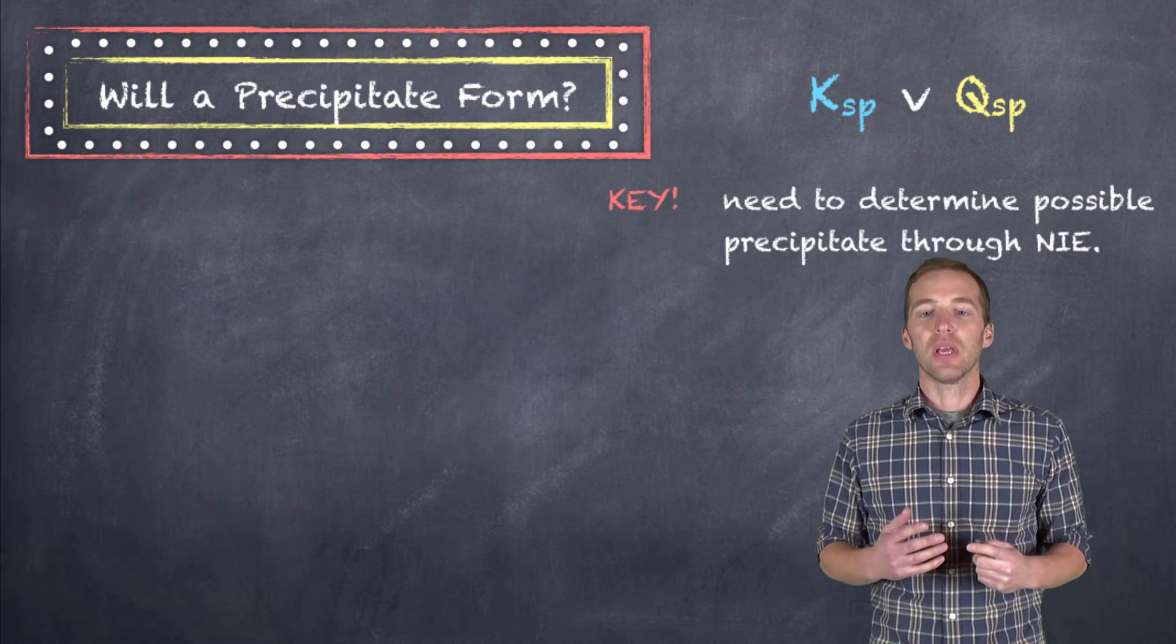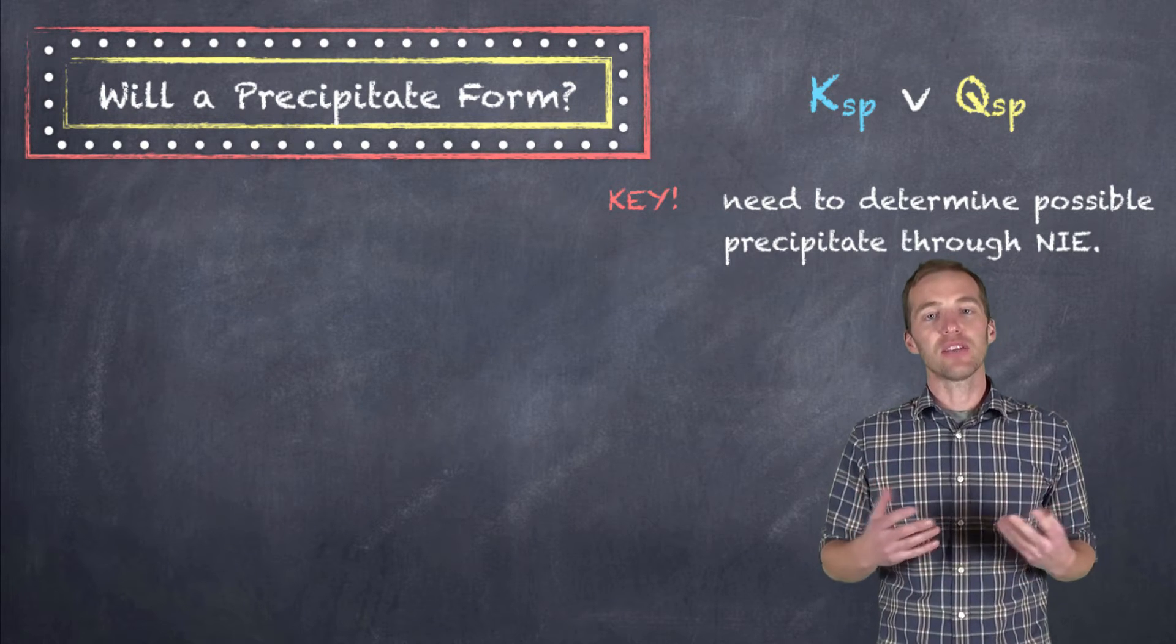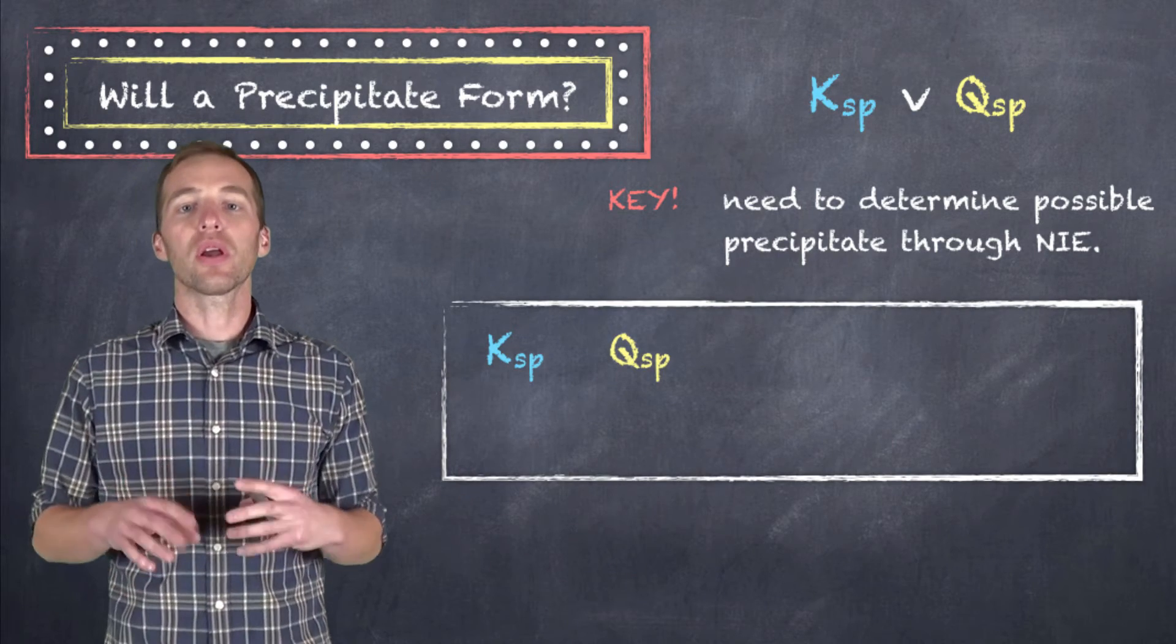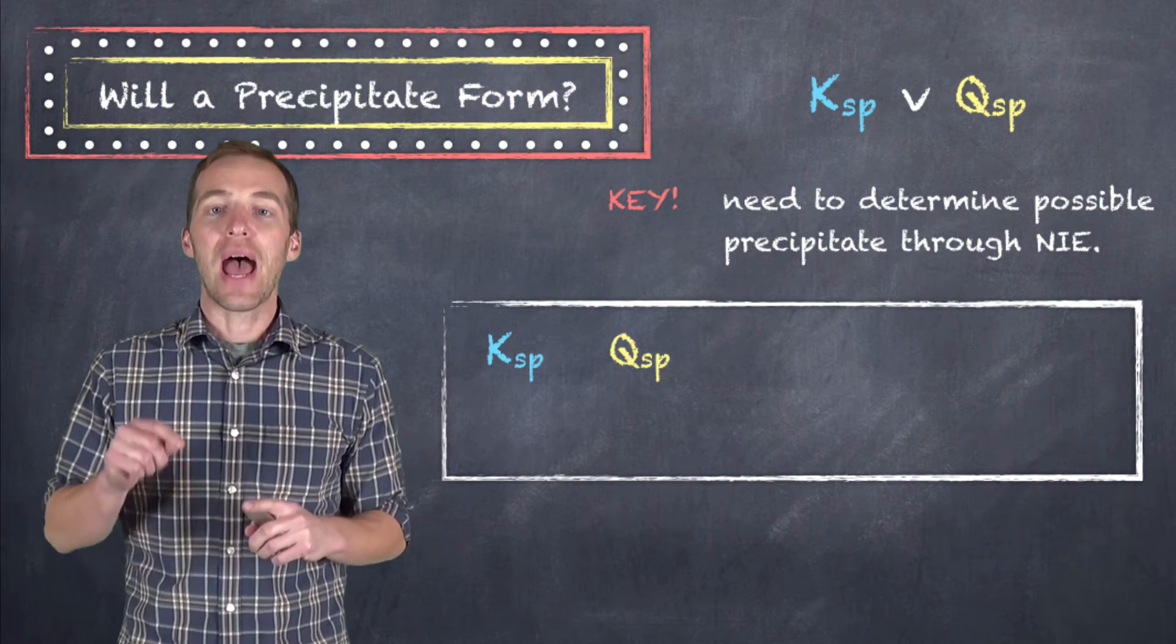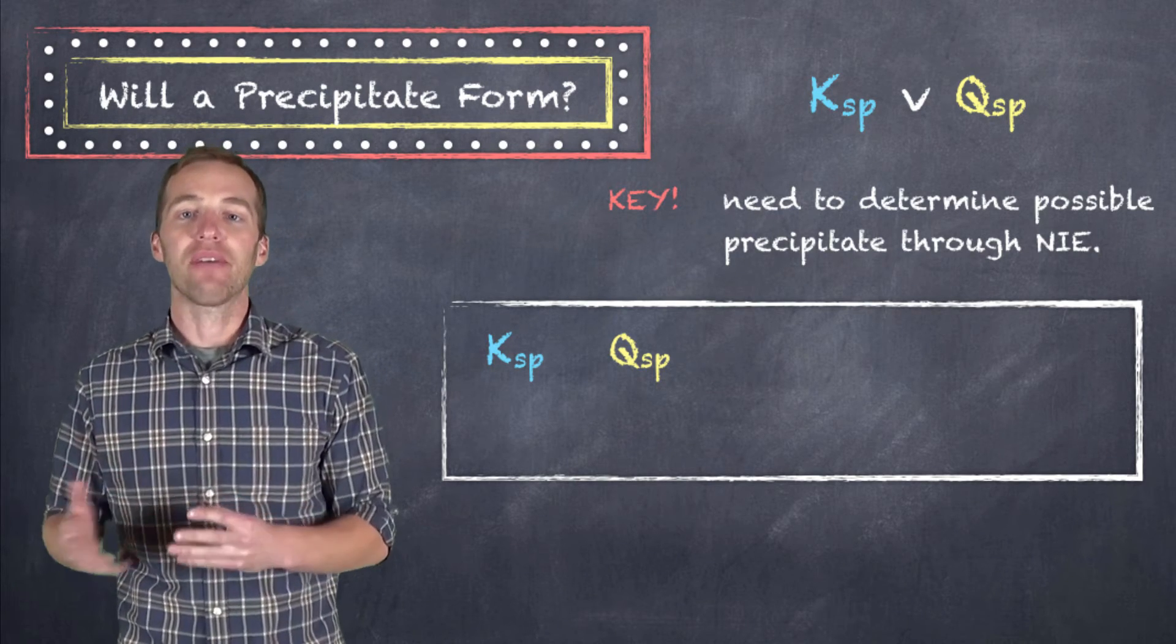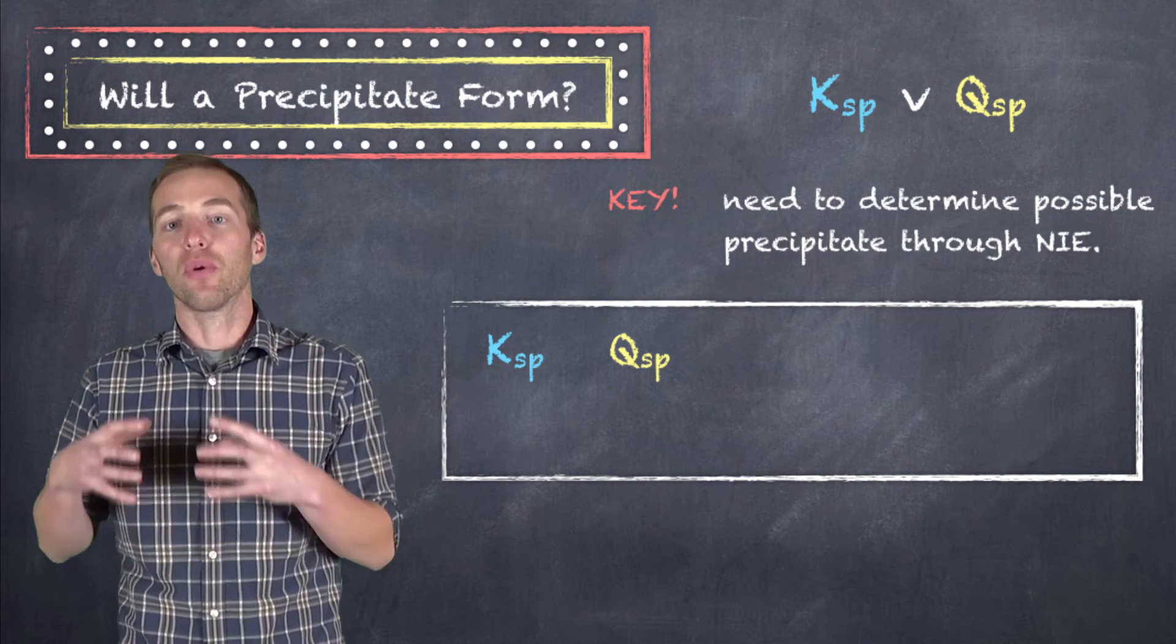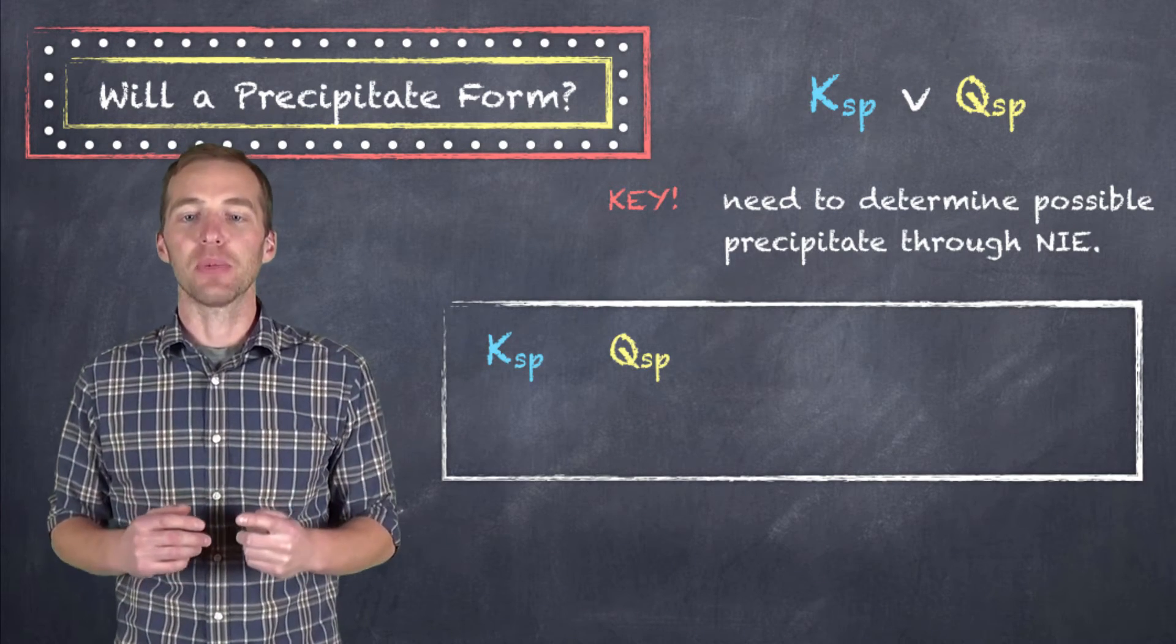And then what we do is we are going to take the Ksp, and the Ksp traditionally will be given to us, and compare it to the Qsp. So we're going to have to establish what the concentrations of the ions are at this particular time or at the particular moment in time that you have the data for. And then what you do is compare your Qsp that you've calculated for the current time or the current set of data that you have, and you compare it to the Ksp.